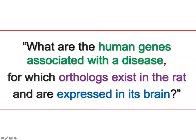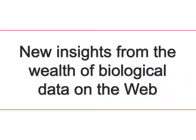For the human genes associated with a disease, you could use the UniProt database. For the orthologs existing in the rat, you could use the OMA — Orthologous Matrix — database. And finally, for gene expression data, you could use the BG database. By doing so, we can enable new insights from the wealth of biological data on the web.